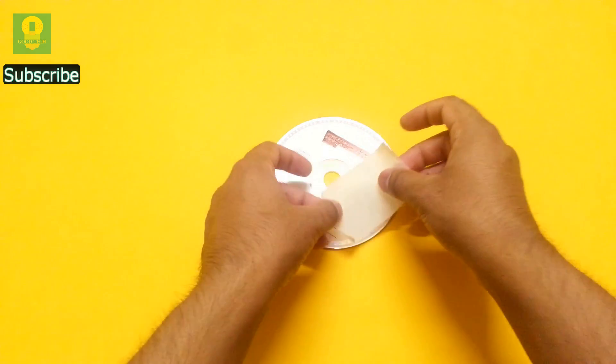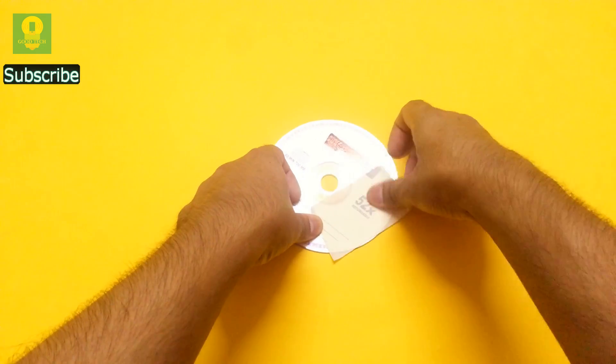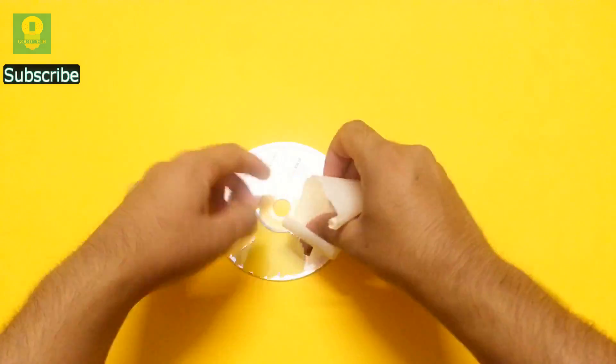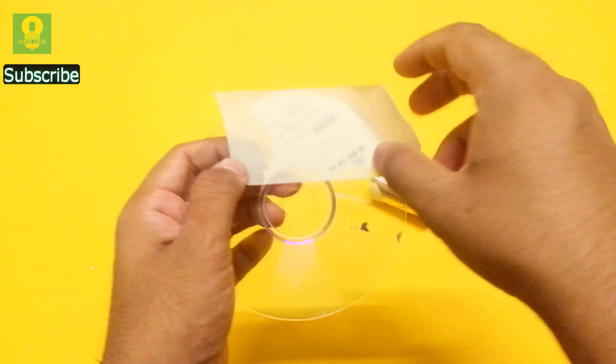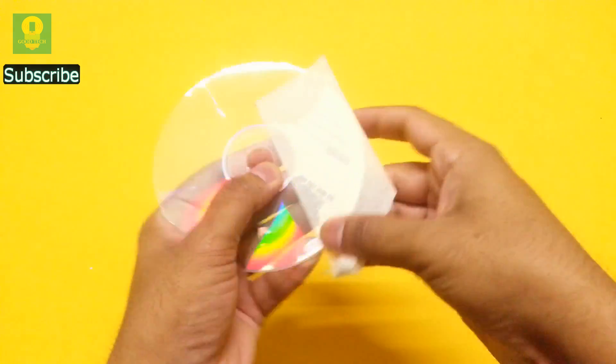Now take some sticky tape, paste the tape over the label and pull the tape instantly to remove the label from the CD. Keep repeating this step till the label is completely removed from the CD.